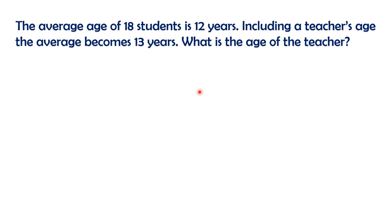The average age of 18 students is 12 years. Including a teacher's age, the average becomes 13 years. What is the age of the teacher?